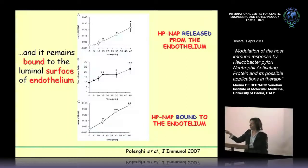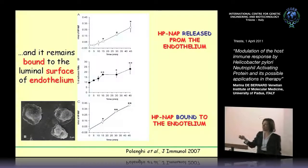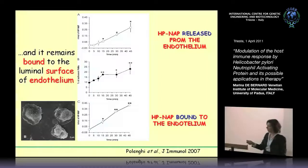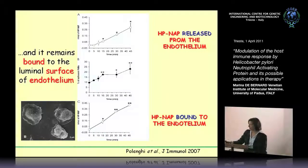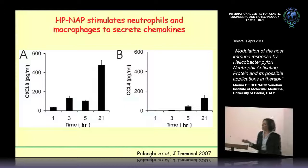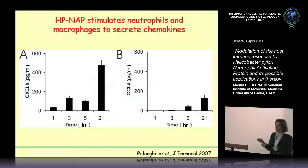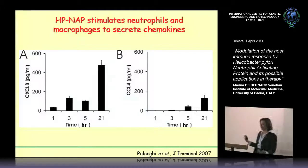The proportion of H. pNAP which remains on the endothelium is capable of inducing the adhesion of leukocytes, as you can appreciate from the flattened morphology of the cells. Moreover, we were also able to demonstrate that H. pNAP stimulates macrophages and neutrophils to release chemokines such as CXCL8 and CCL4, which are known to contribute to sustaining the inflammation.